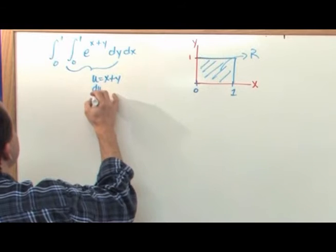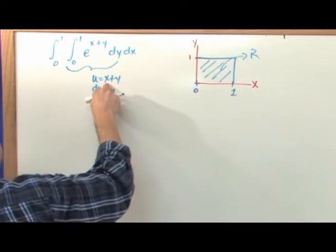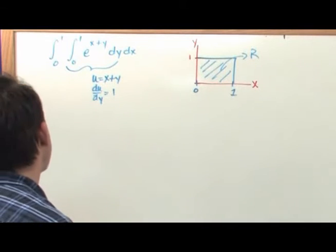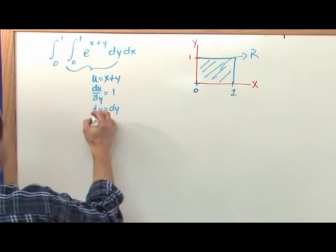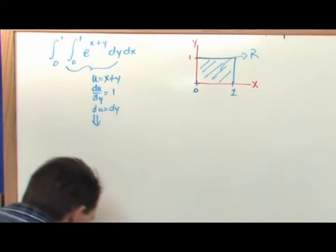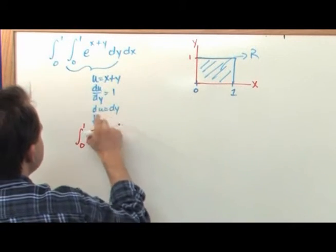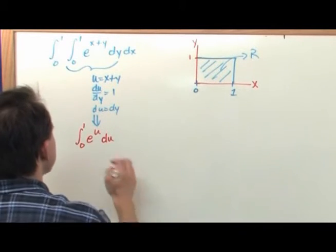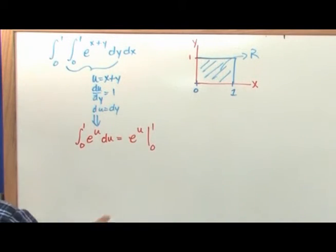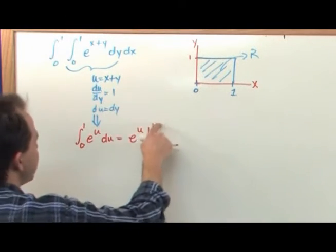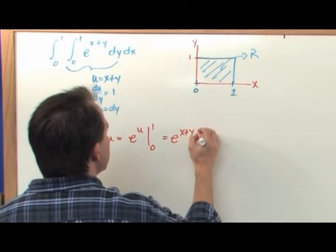du with respect to y — because that's what I'm integrating with respect to — is just 1, since I'm holding x constant. So du = dy. I'm going to rewrite this integral as the integral from 0 to 1 of e^u du. Since dy = du, that equals e^u evaluated from 0 to 1. But I don't want to evaluate yet with the substitution variable, so let's substitute back: e^(x+y) evaluated from 0 to 1.